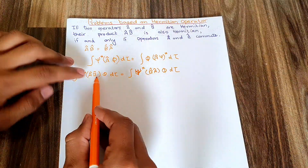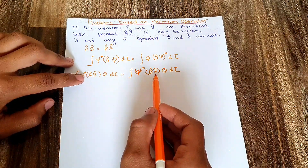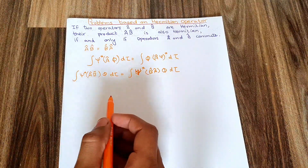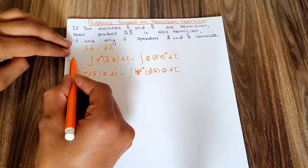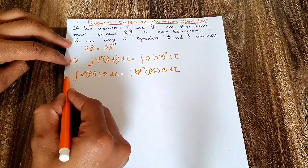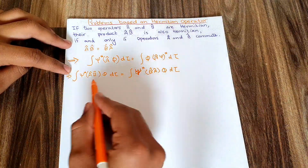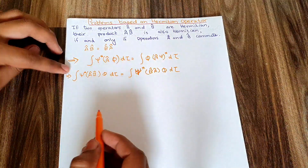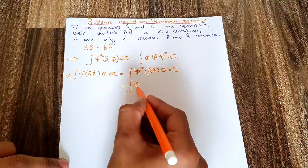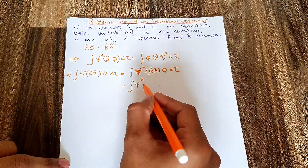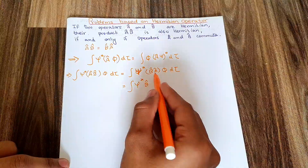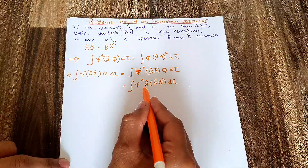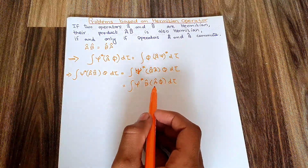Whether we write AB or BA, the order of application doesn't matter and their answers should be equal. The general equation for a Hermitian operator is one equation, and the commutative property is another. Now what if I take the product of operator AB? I am going to take the product of operators A and B.